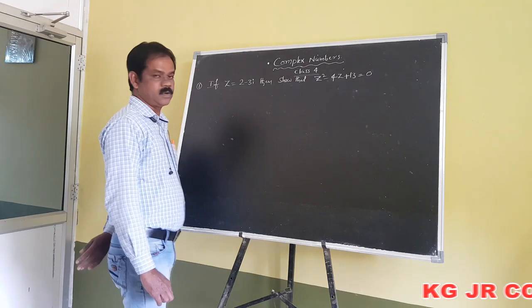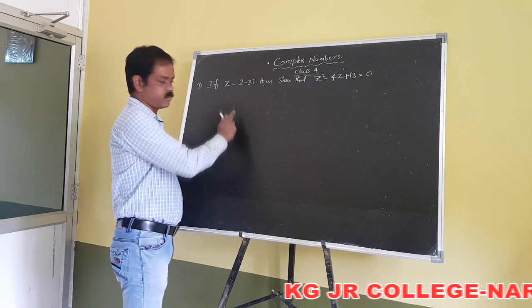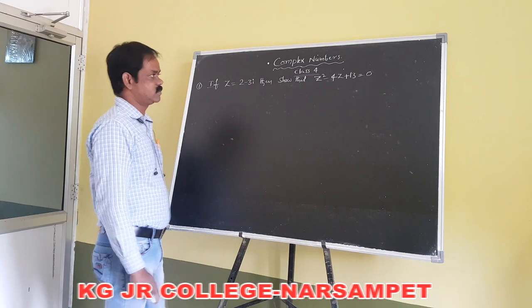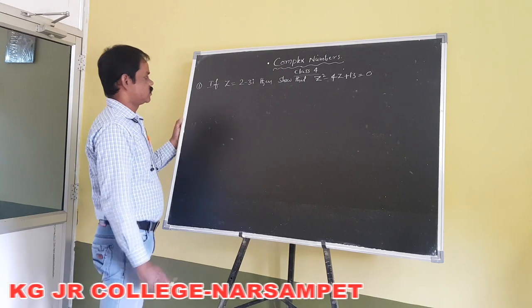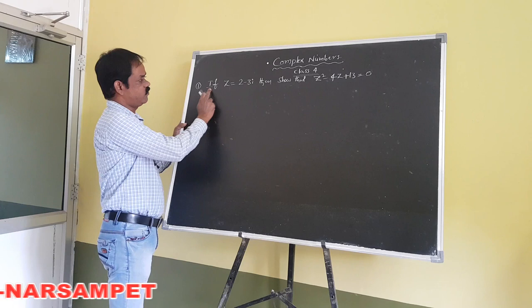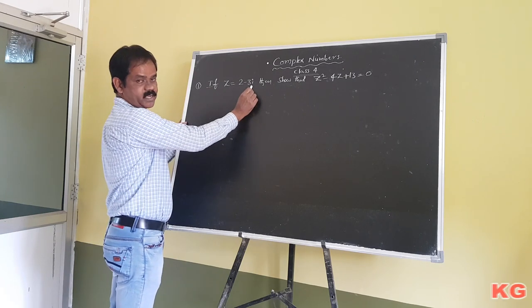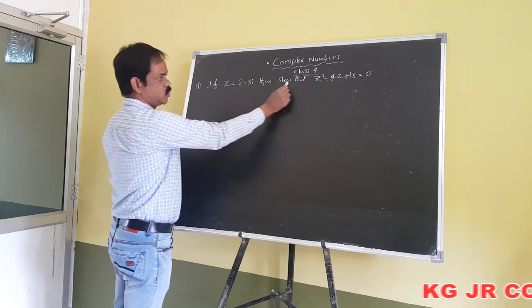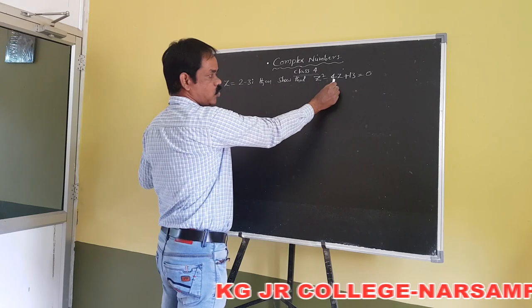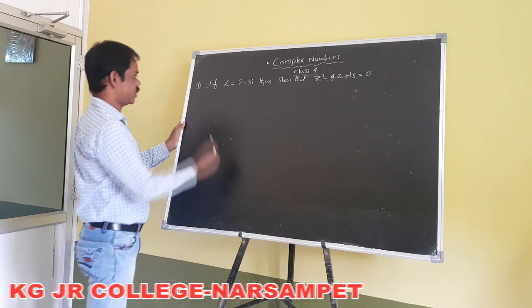Good morning friends, today we are discussing some problems from chapter complex numbers. The first problem is: if z is equal to 2 minus 3i, then show that z squared minus 4z plus 13 is equal to 0.